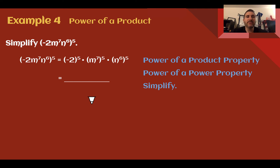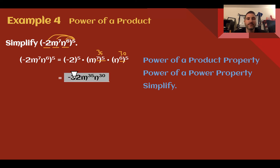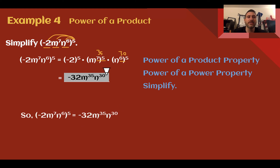Example 4, power of a product: Simplify negative 2m to the 7th, n to the 6th, all to the 5th power. Here we have a constant factor, a factor of m's, and a factor of n's. Distribute the exponent of 5 to everything: negative 2 to the 5th, m to the 7th to the 5th, and n to the 6th to the 5th. 7 times 5 is 35, 6 times 5 is 30. Negative 2 to the 5th is negative 32. So the expression equals negative 32m to the 35th, n to the 30th. A common mistake is to forget to apply the power to the coefficient out front.